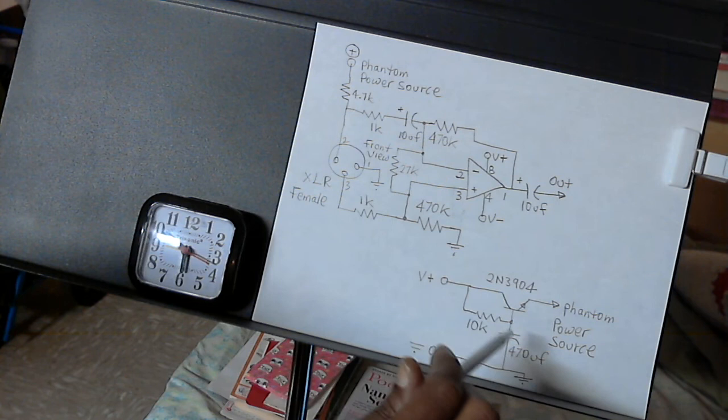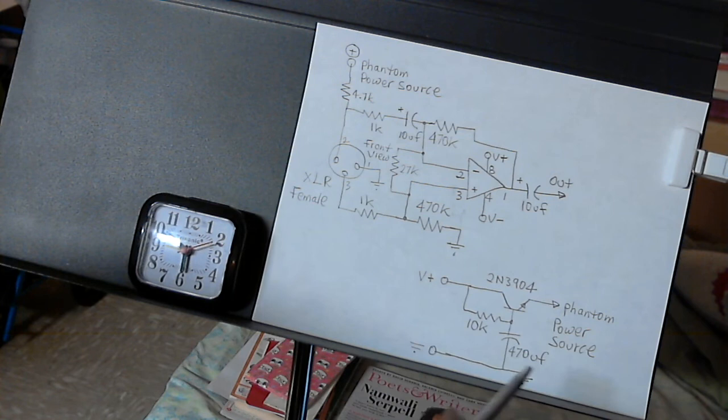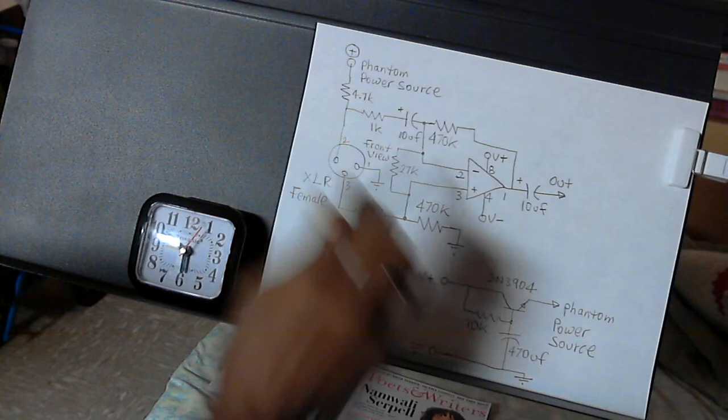10k resistor to the base in the collector of the 2N3904 transistor, and this should filter out the DC, so you have a smooth DC coming out here for the phantom power up here.